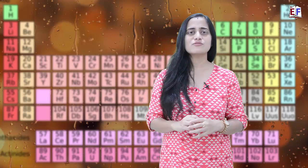Hydrogen was placed on top of group one because of the similarity in electronic configuration with alkali metals — hydrogen also has one valence electron, just like lithium, sodium, and potassium. However, hydrogen is an exception because its properties are not similar to those of the alkali metals, primarily due to its very small size.